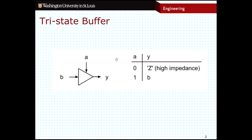What are these used for? Consider the case where I have an output that I want to select from multiple different registers. I can use these tri-state buffers to select which register is going to be active at any given point in time. Let's take a look at an example.